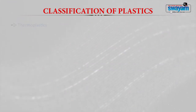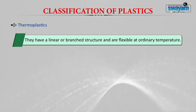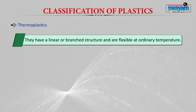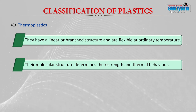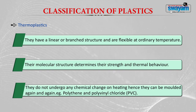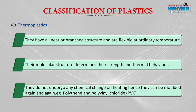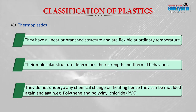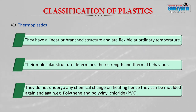The third type based on thermal property is thermoplastics. They have a linear or branched structure which is very flexible even at ordinary temperature. Their molecular structure determines their strength and thermal behaviour. They undergo chemical changes while heated and can be moulded and remoulded again and again. Examples are polythene, polyvinyl chloride, and polybags.